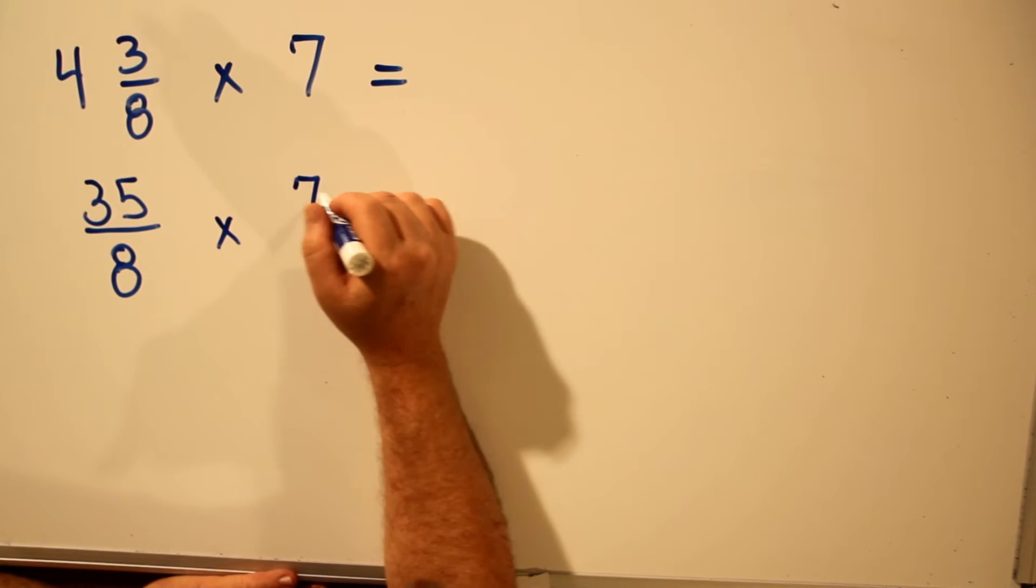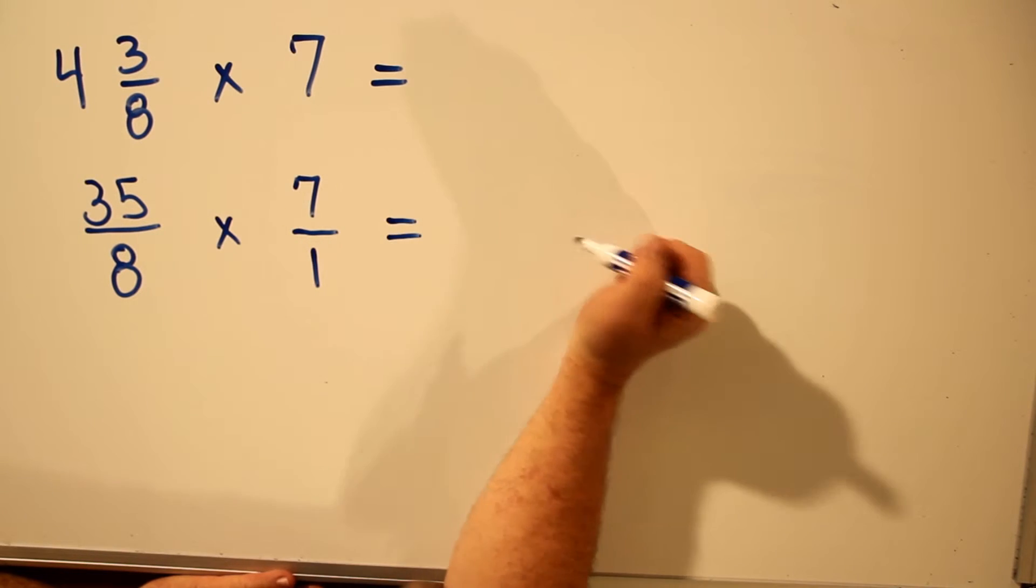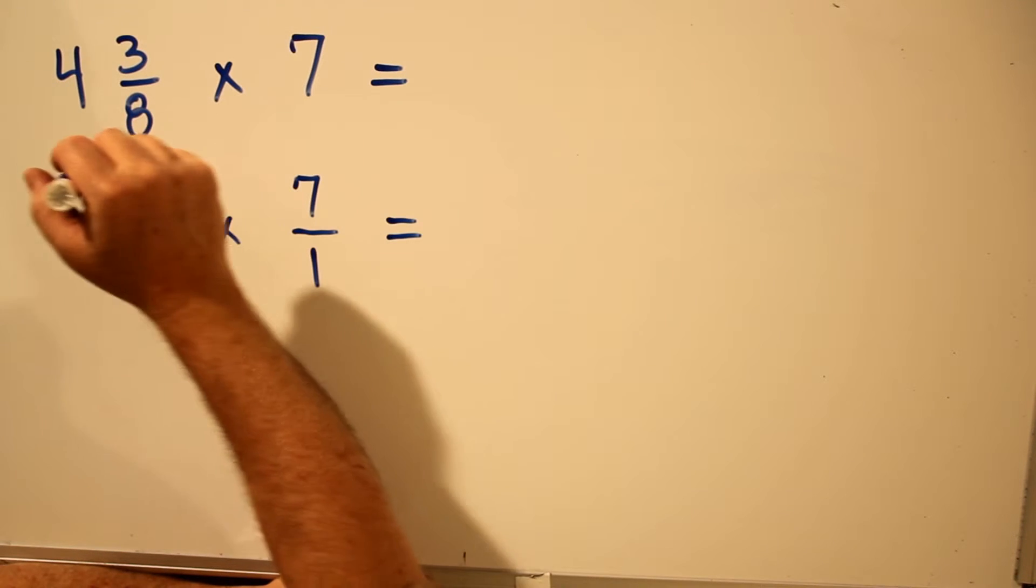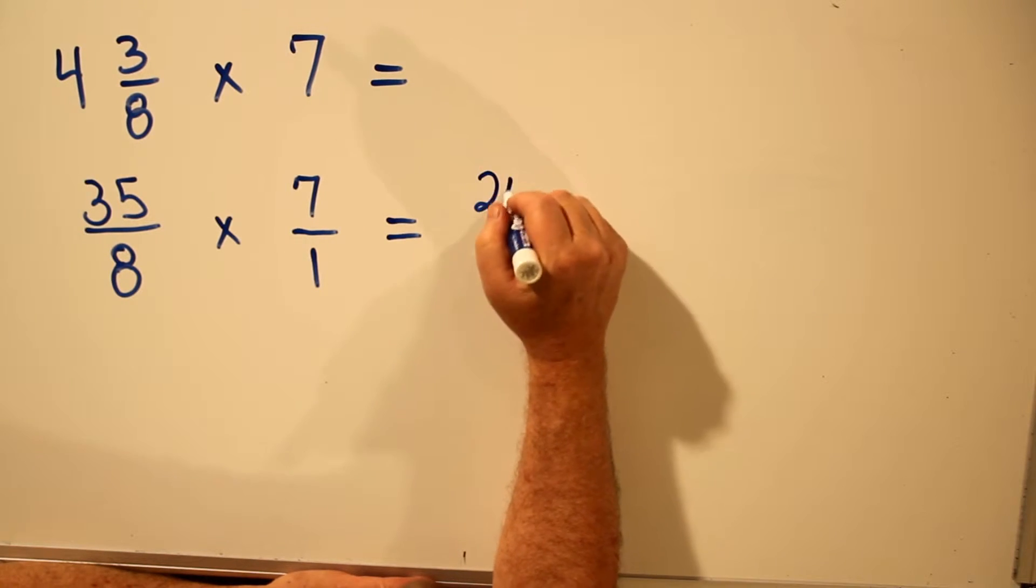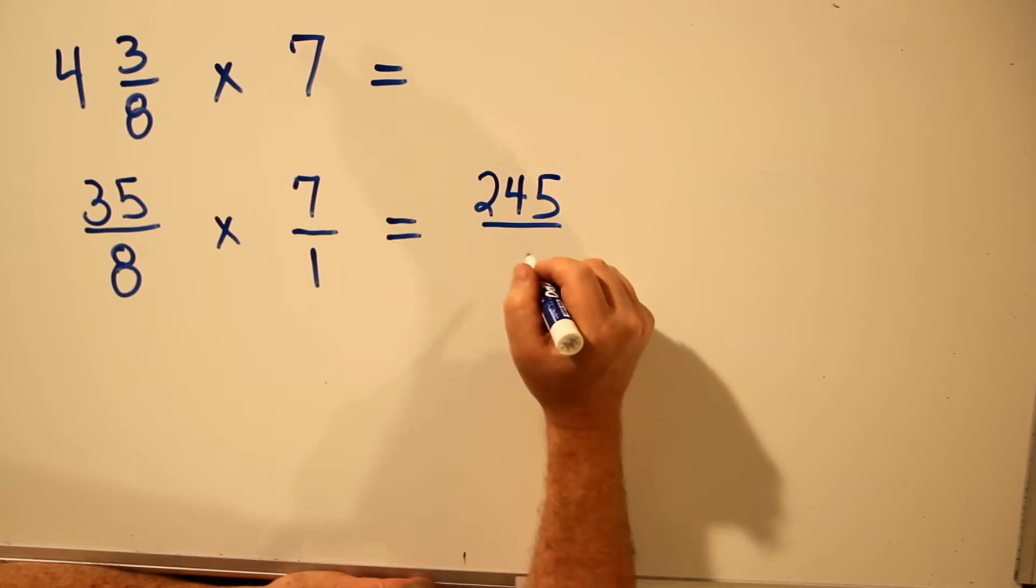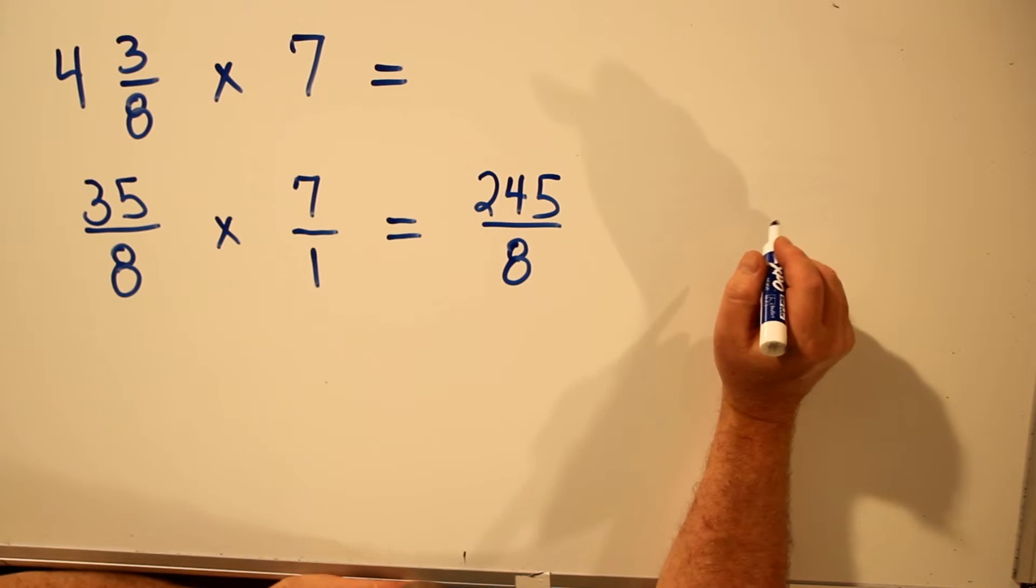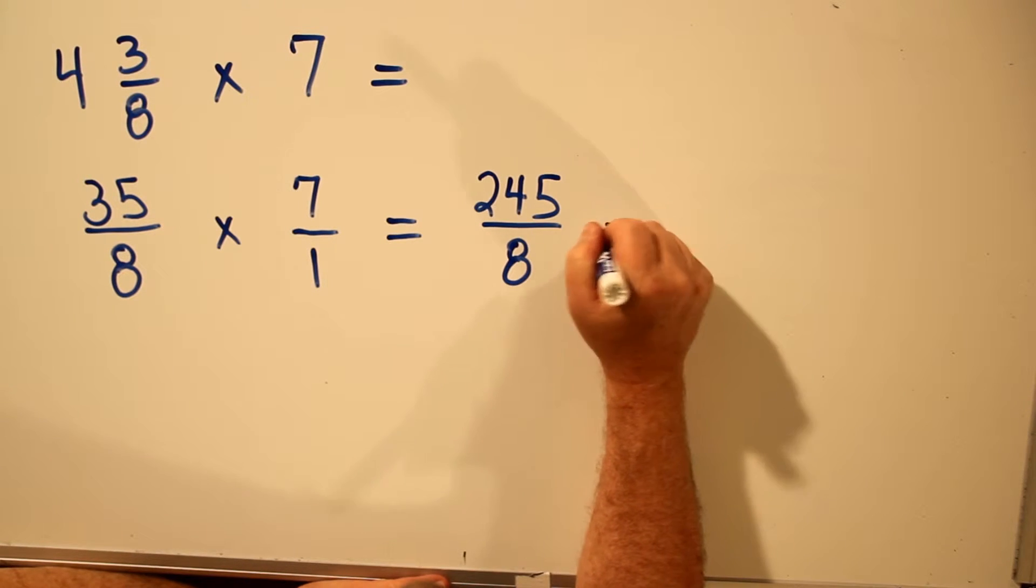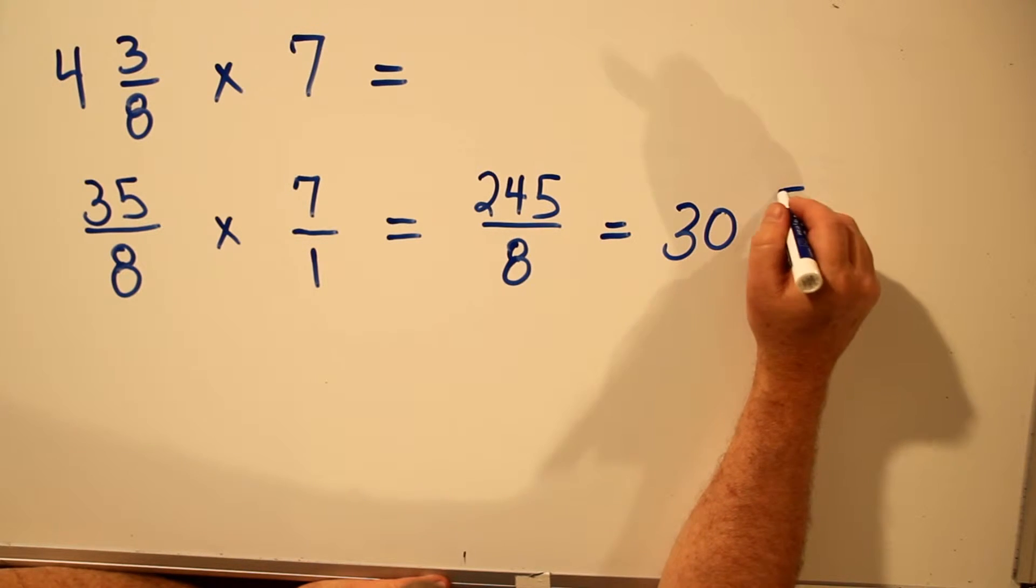And remember, any whole number can be written as a fraction over 1, which makes it easy to see the operation. 35 times 7 is 245. 8 times 1 is 8. And the answer is 245 over 8, which is an improper fraction. In simplest form, this would be written as 30 and 5/8.